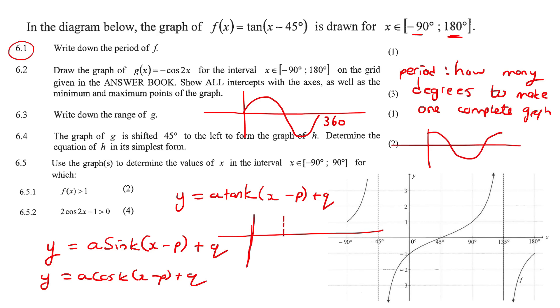has an asymptote at 90 and 270. And then it does something like this. So a period of a normal sin is 360, as well as a cos. Cos and sin is 360. A normal tan is 180.